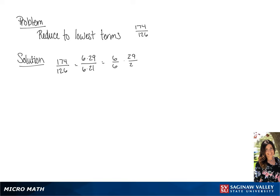This gives us 6 over 6 times 29 over 21. Since 6 over 6 is equal to 1, we get our final answer of 29 over 21.